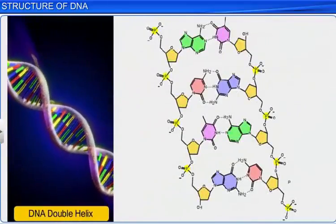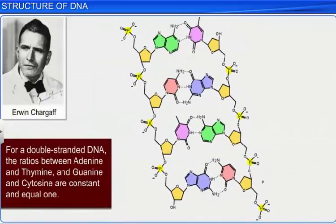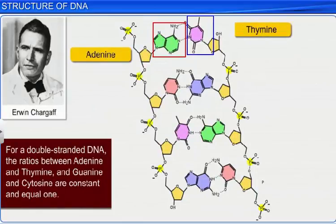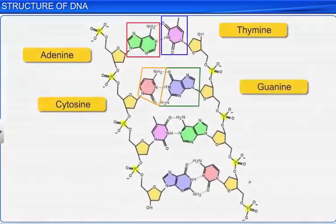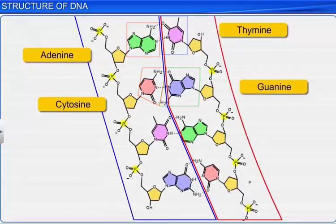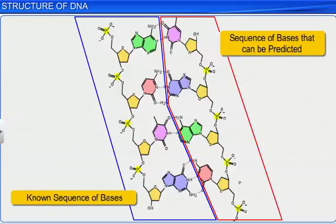This proposition was based on observations made by Erwin Chargaff, who found that the ratios between adenine and thymine, and guanine and cytosine, are constant and equal to 1 for a double-stranded DNA. In fact, due to base pairing, the polynucleotide chains possess a very unique property: the strands of the base pairs are complementary to each other. Therefore, if we know the sequence of bases on one strand, it is possible to predict the sequence in the other.